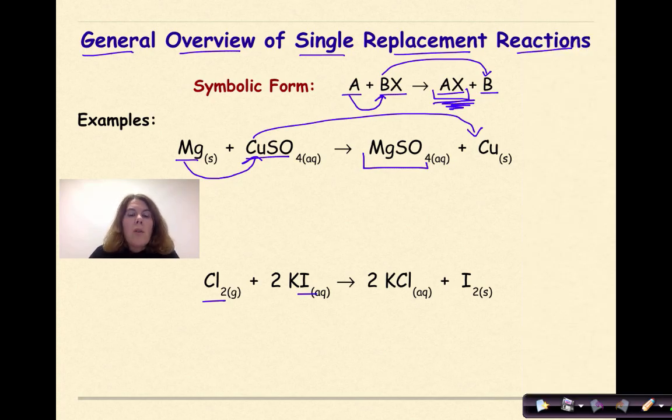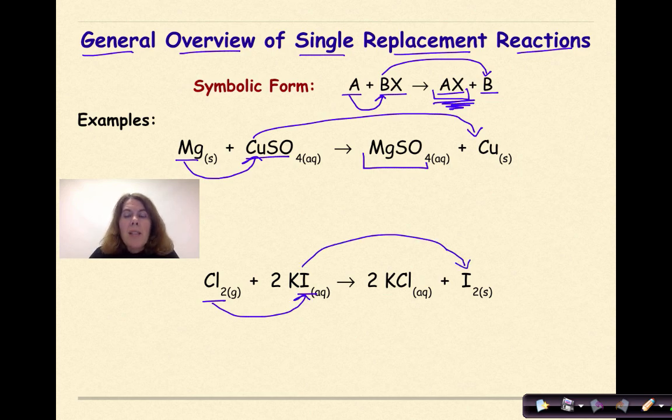So chlorine comes in and it kicks out the iodine. The iodine will be represented as a diatomic. So we see it as I2 here because that is its most stable form. Then the potassium will hook up with the chlorine to be represented as potassium chloride.